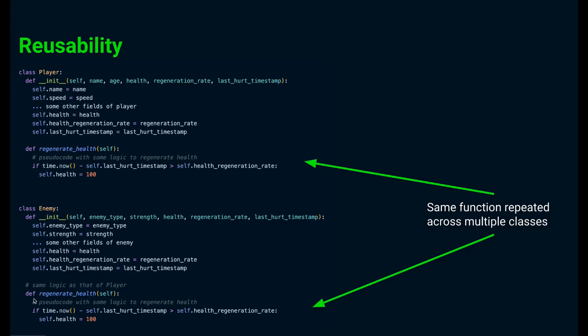Here the player class and the enemy class both have their own method which do the same thing. This leads to code duplication. Another option is to create a health generation class but we would still need to know whose health we are increasing: the player's health or the enemy's health.